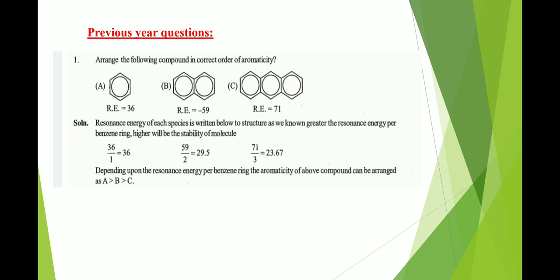Previous year question one: Arrange the following compounds in order of their aromaticity. As we discussed, according to the annulation effect, as the number of rings increases, aromaticity decreases. Option A contains one benzene ring, option B contains two benzene rings, and option C contains three benzene rings — benzene, naphthalene, and anthracene respectively. Therefore option A has more aromaticity than B, which has more than C.